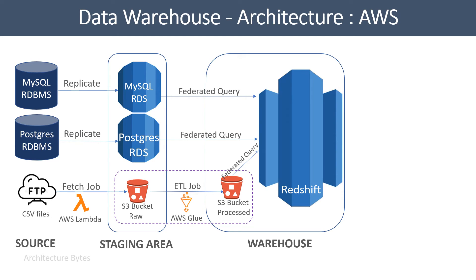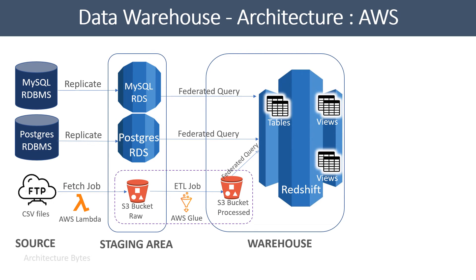In order to load data from staging RDS into Redshift, we can use federated queries. A federated query is a query which can extract information from external databases. You write and execute it in Redshift and it can fetch data from other databases. You can also use federated queries to load data from an S3 bucket into Redshift. These queries will be SELECT statements. This simplifies the job of loading data into Redshift. All the loaded data is stored in tables.